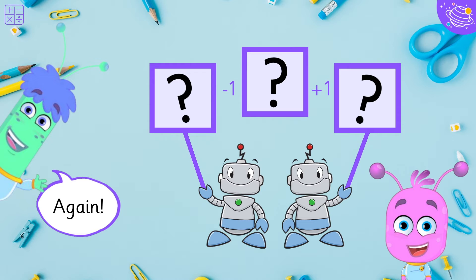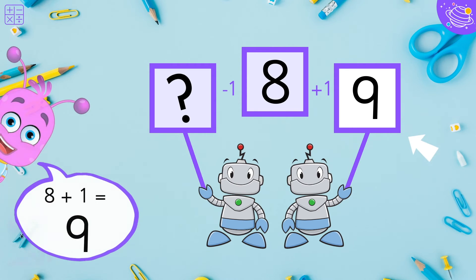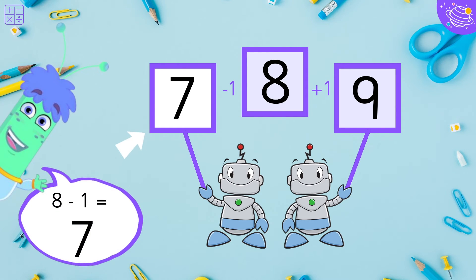Again. Which number is one more than eight? Eight plus one equals nine. Which number is one less than eight? Eight minus one equals seven.